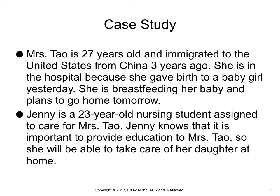Mrs. Tao is 27 years old and immigrated to the United States from China three years ago. She is in the hospital because she gave birth to a baby girl yesterday. She is breastfeeding her baby and plans to go home tomorrow. Jenny is a 23-year-old nursing student assigned to care for Mrs. Tao. Jenny knows that it is important to provide education to Mrs. Tao so she will be able to take care of her daughter at home.